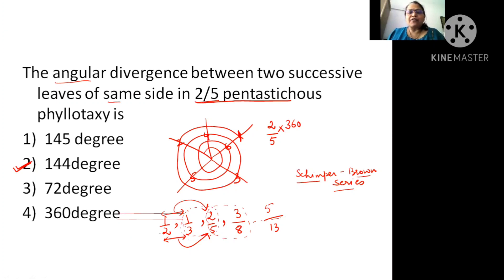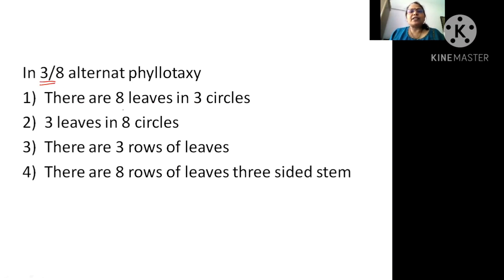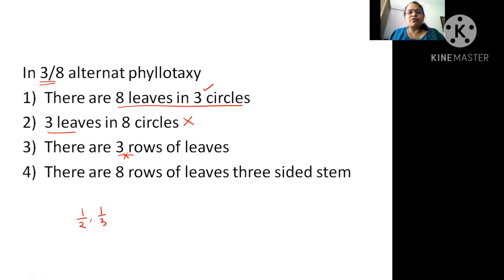For three by eight alternate phyllotaxy: if they have taken only one circle with two leaves, the third is on top of the first; here the fourth is on top of the first; and the sixth is on top after covering two turns. For three by eight, there are eight leaves in three circles. There are eight rows of leaves — remember, for one by two it was two rows, one by three was three rows, and two by five was five rows — so eight rows. The correct answer is: there are eight leaves in three circles.